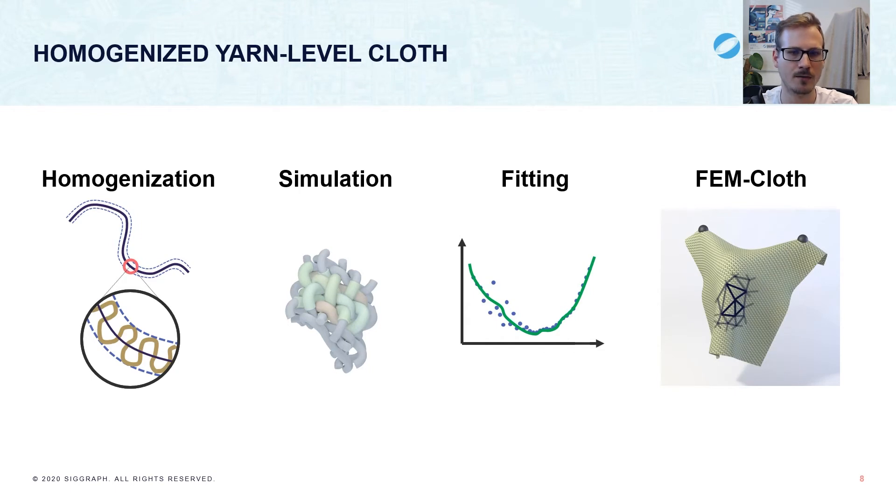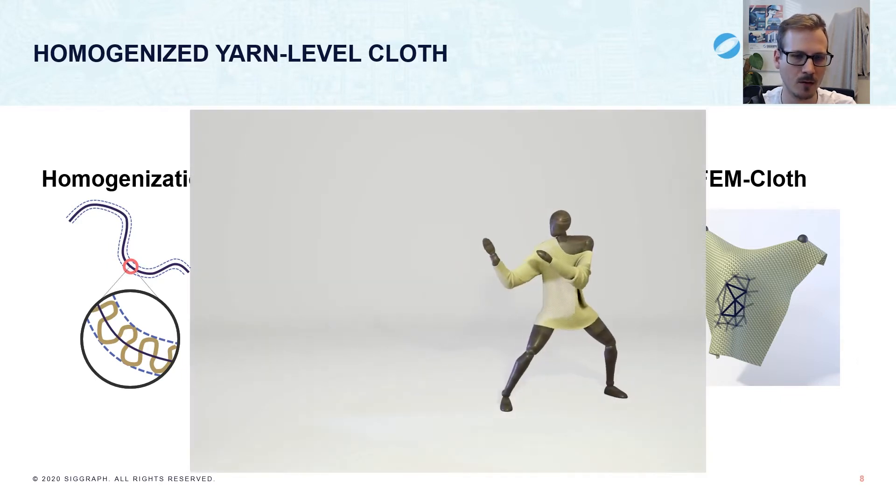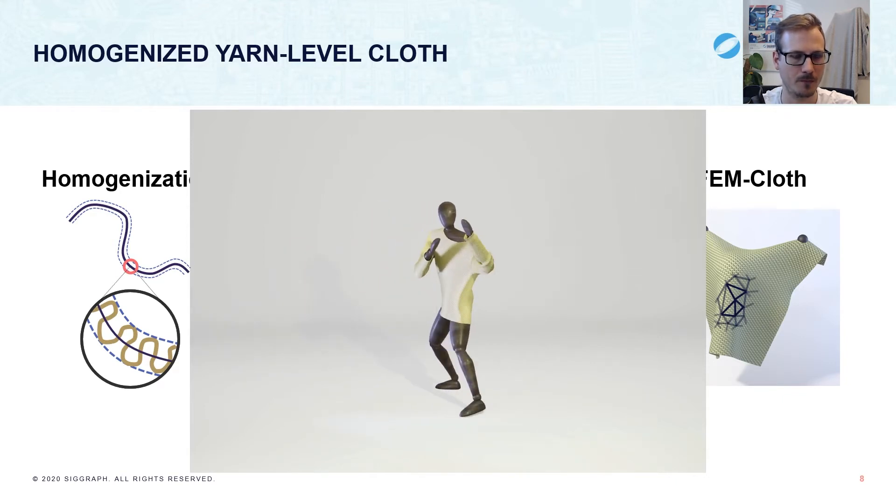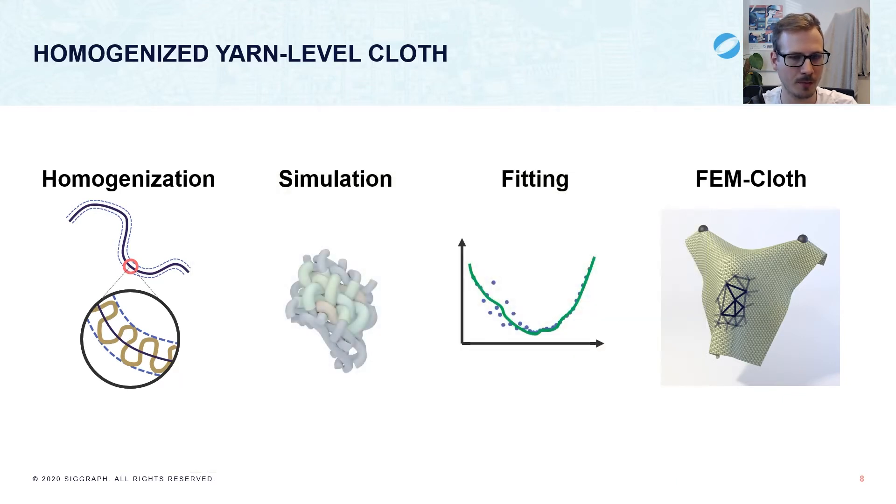Since we only have to simulate a small tile on the micro-scale, generating the data is fast. Then the fitting is basically instantaneous, and we can exploit the benefits of mesh-based simulation such as remeshing or scalability, achieving an order of magnitude speedup even on moderate scales. At larger scales, our models can reproduce the behavior of knitted cloth in a reasonable amount of time. In the following, I will go through the parts of the pipeline shown here. I'll focus mostly on the homogenization side and give a more brief description of the rest before showing some results.